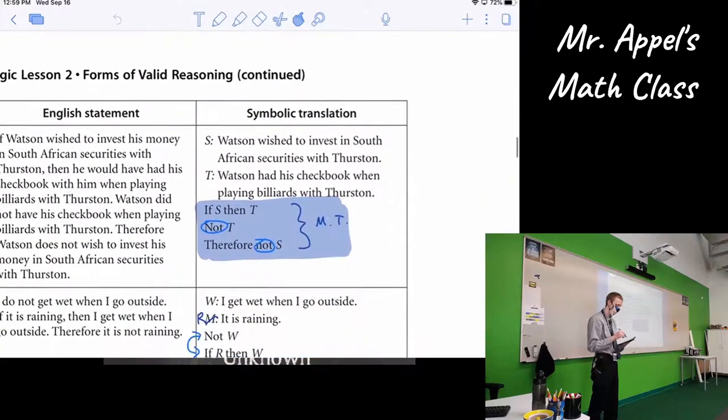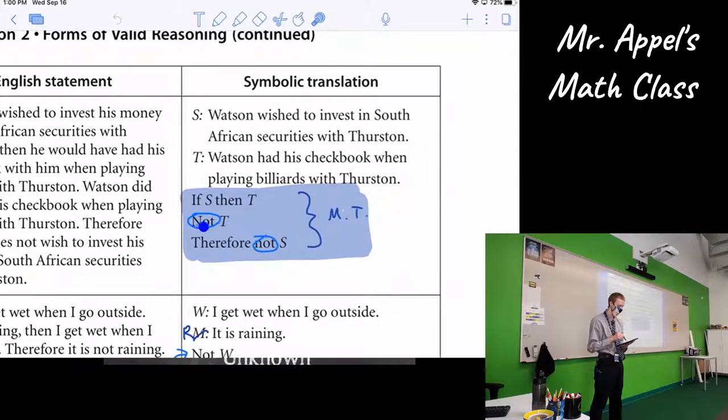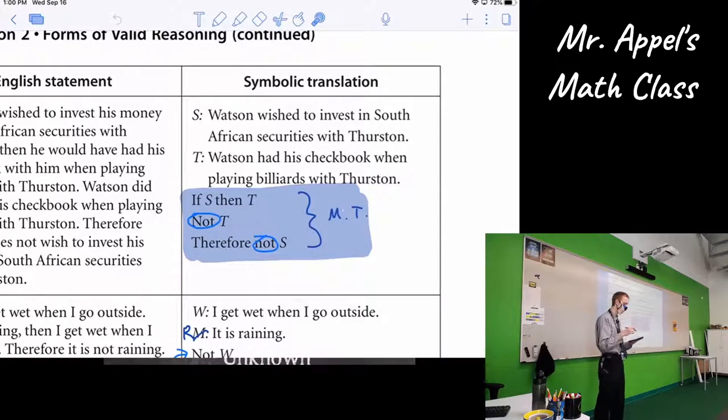And then the other option we had was modus tollens, and that was similar setup. You still have the conditional, if S then T. But now we're going to also state the negation of the second half, which allows us to conclude the negation of the first half, right? So it's opposite and backwards day, right? You got to make sure you switch. Both things, you're going back to front and negate both of them. All of this must be together in order for it to be a proper application of modus tollens.